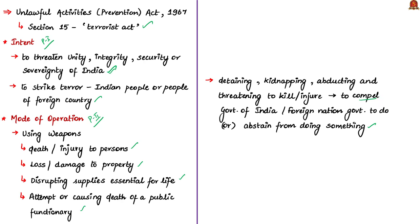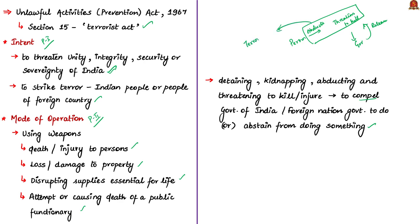For example, a person abducts an individual and threatens to kill him. That person's intention is to strike terror and attack the security of India. He says he will not kill if the government releases a terrorist kept in an Indian prison. Here, he has committed a terrorist act because by abducting and threatening, he is compelling the government to take a certain action — that is, releasing the terrorist. This is how the UAPA of 1967 defines terrorist act. You may use this definition in your mains General Studies papers, answer writing, or in your essay writing.